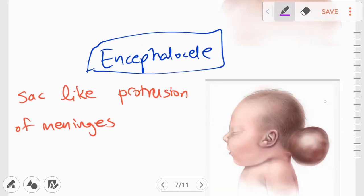The next disorder is called encephalocele. In encephalocele, what we can see is a sac-like protrusion of the meninges with or without brain. That means that you could either have meninges alone or you could have meninges with brain content inside the sac-like protrusion.